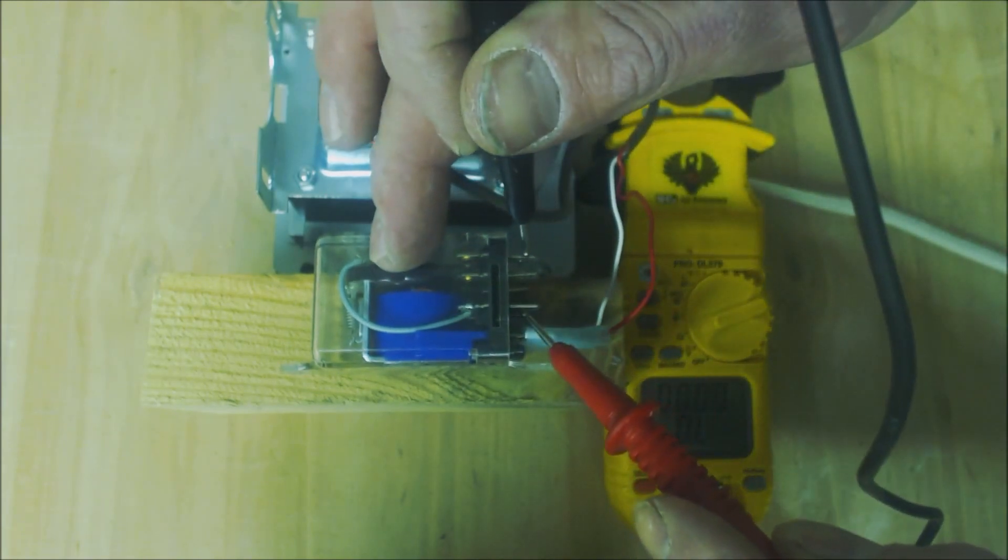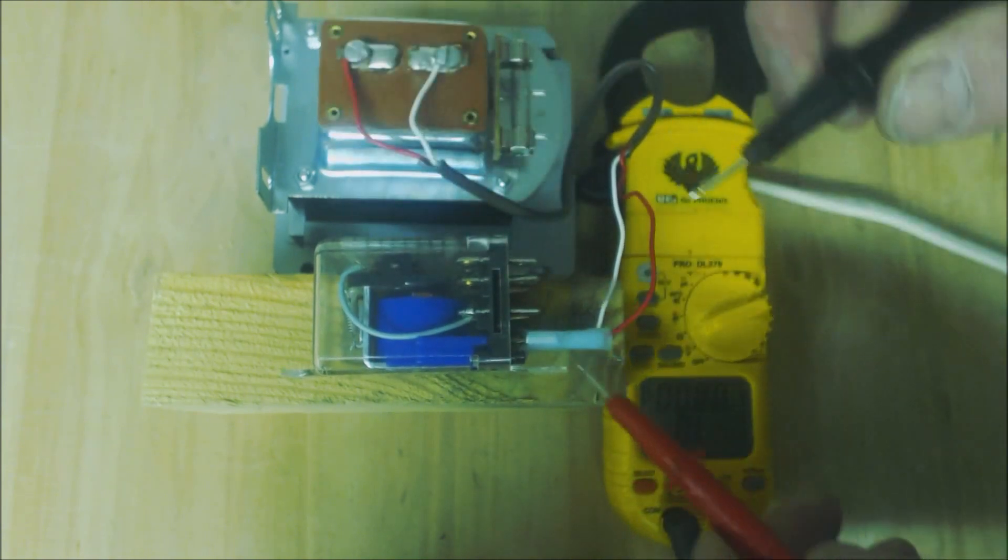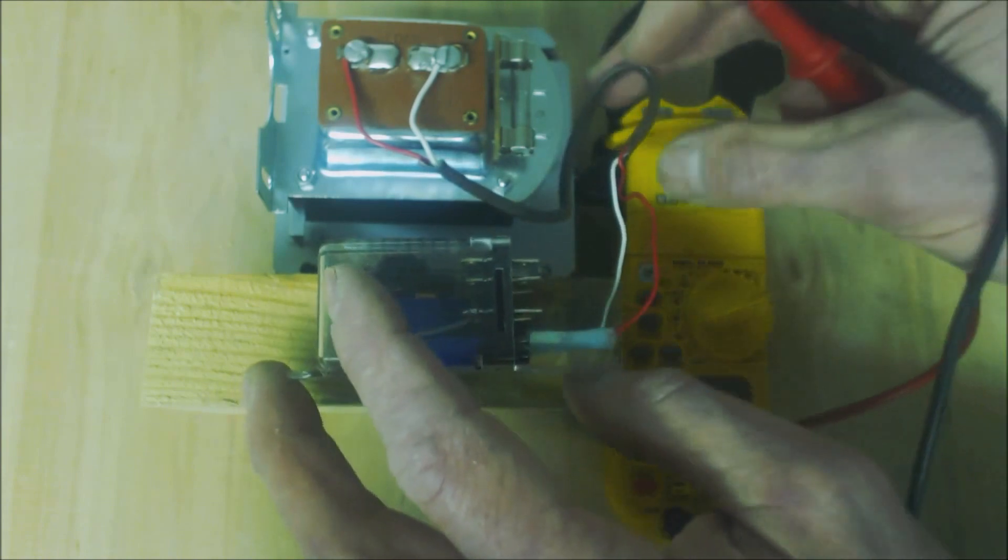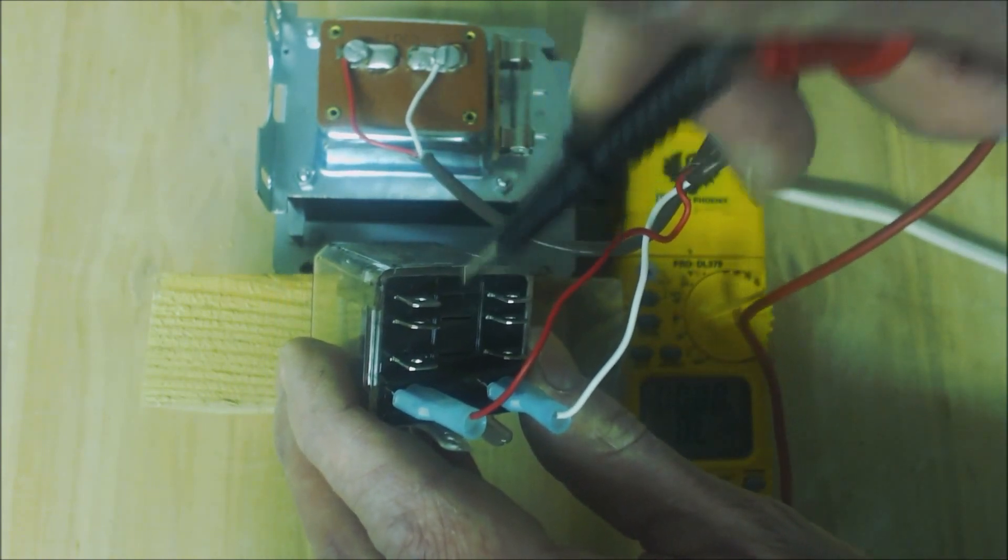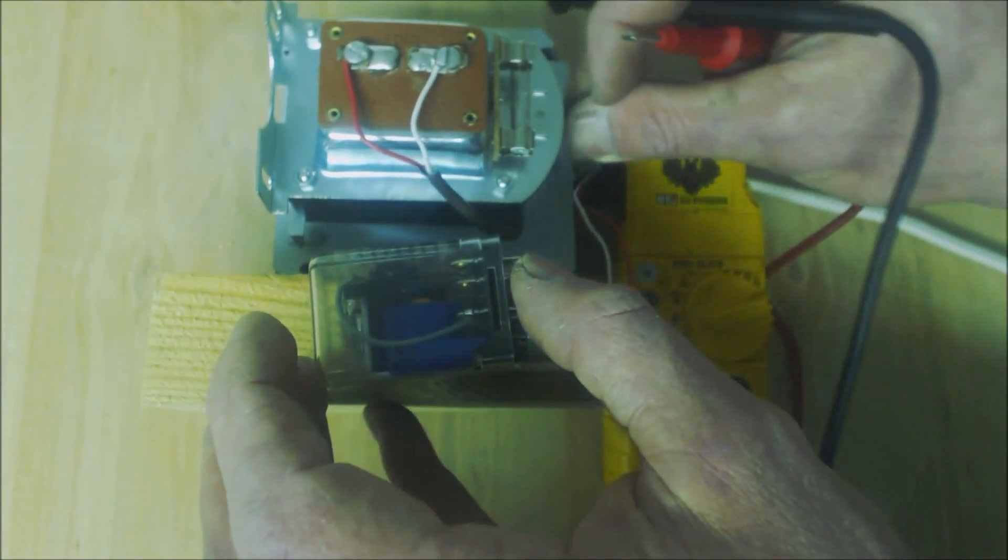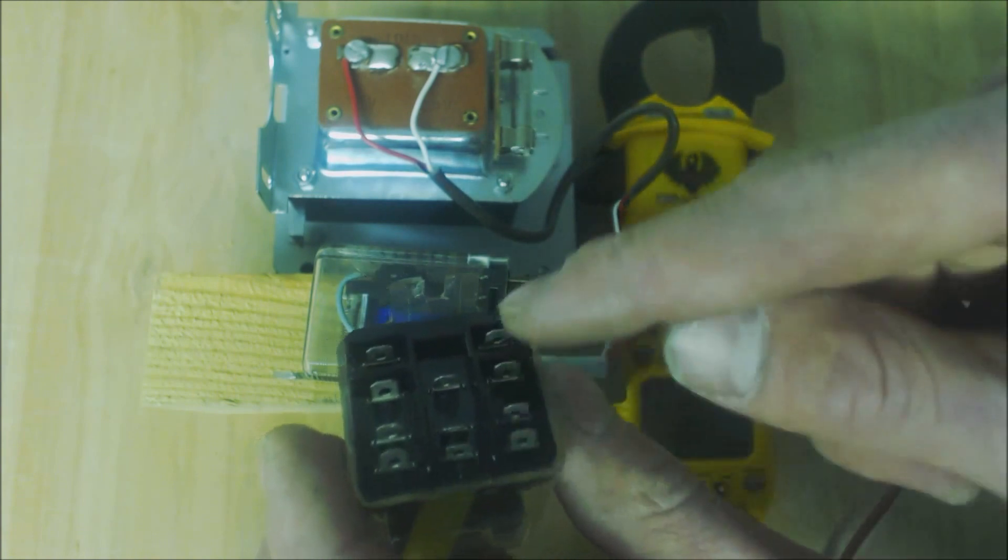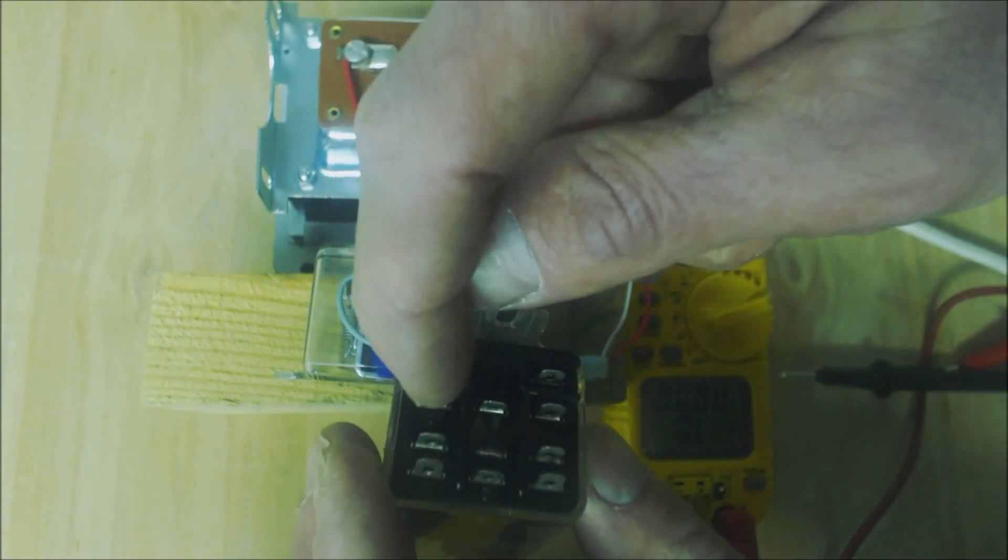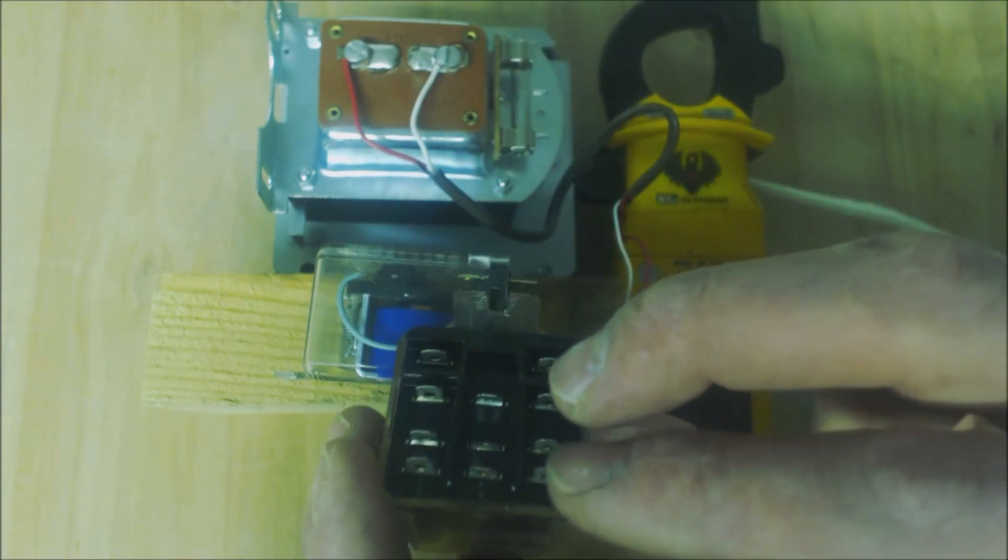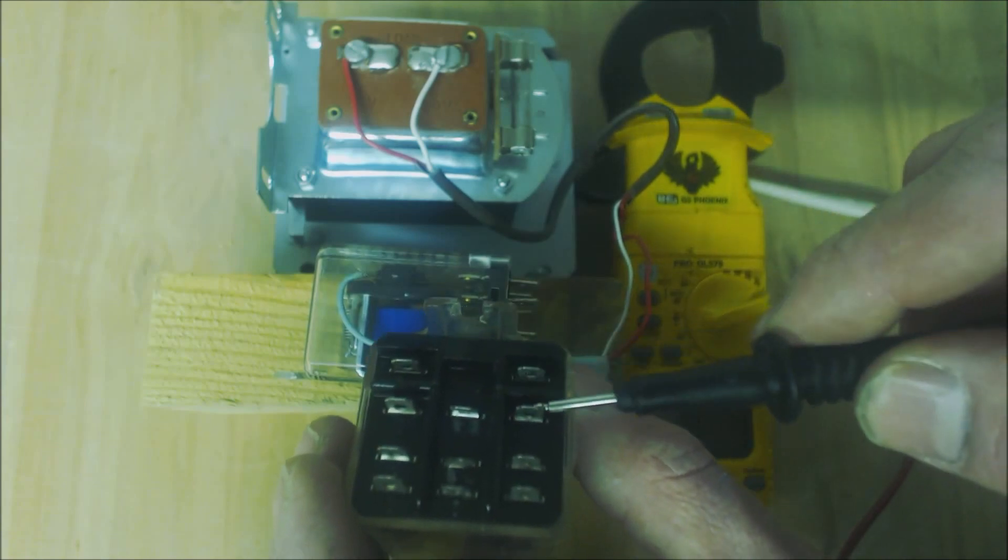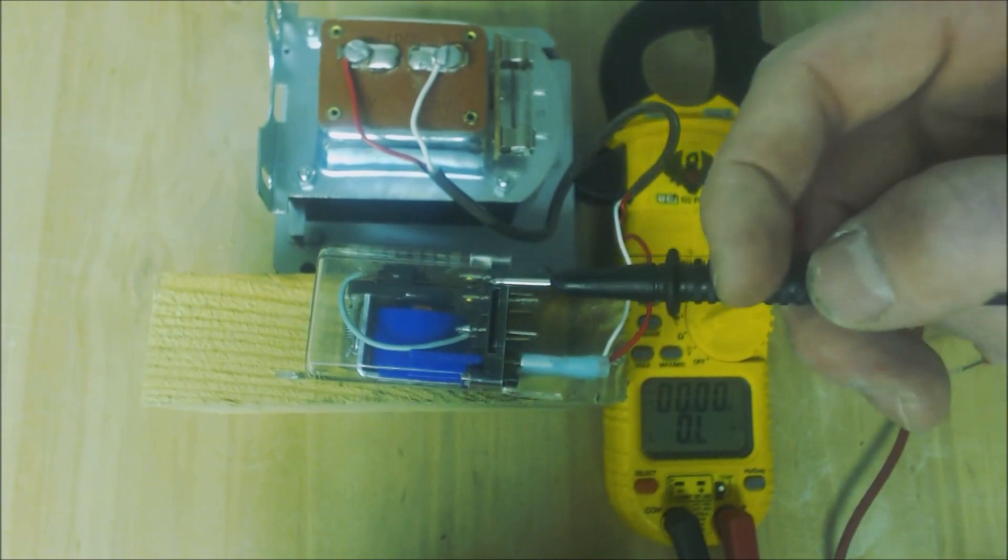That's called the normally closed position, and this is the normally open position. Same thing down here, you have two sets on this one. This one's a 24 volt one. This one right here has three sets of contacts right here and right here. So it's just power in right here, here and here. Your normally closed are the outside ones, and your normally open are here and here.